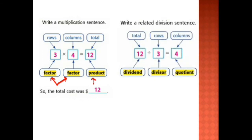If you want to write a related division sentence: to relate multiplication with division, we will take the product, which is twelve, and divide it by one of the factors. For example, we divide it by three. If you divide twelve by three, you will find it equals four. So twelve here is the total — we divide the total by the number of rows and find the answer is the number of columns.